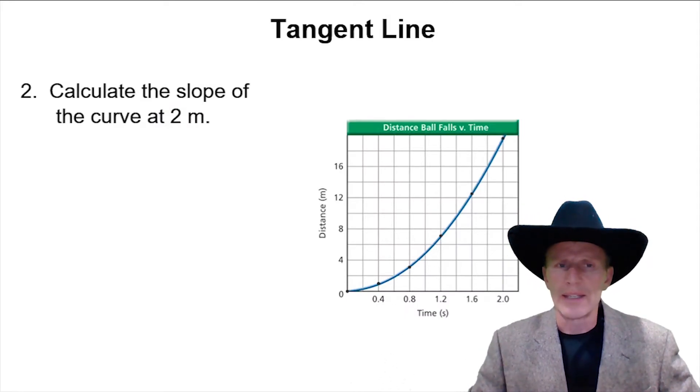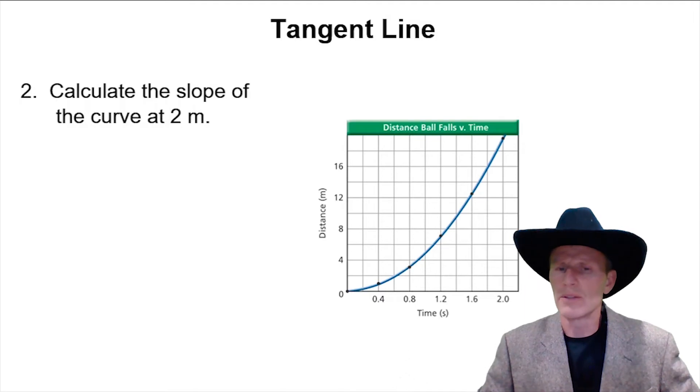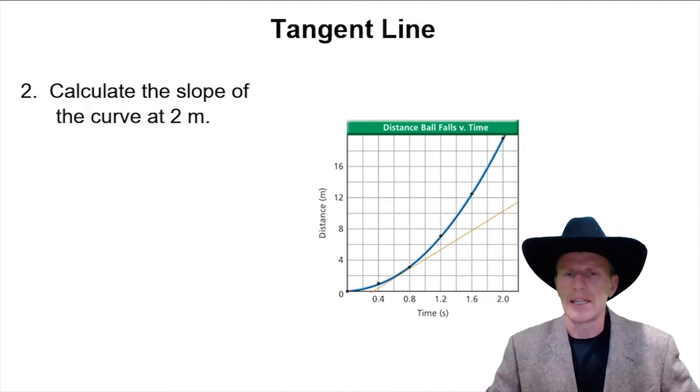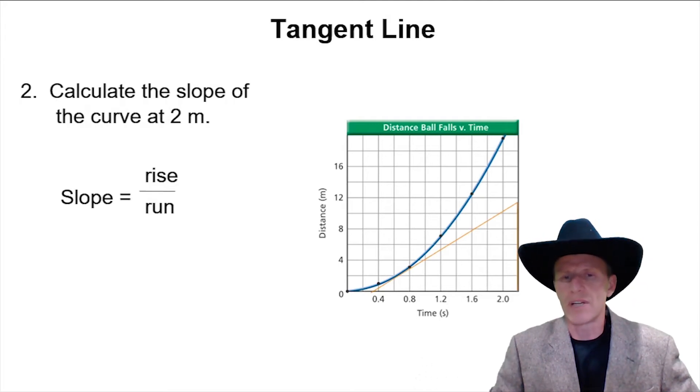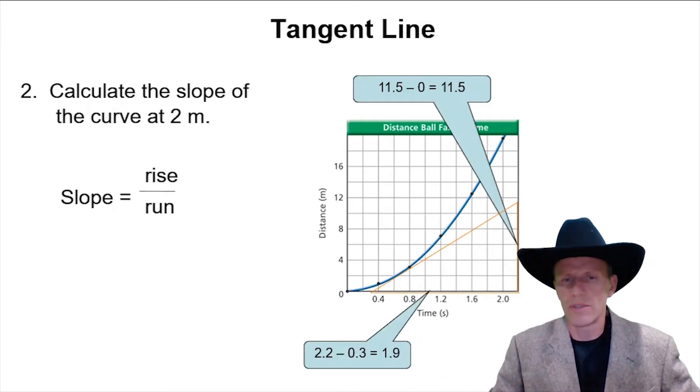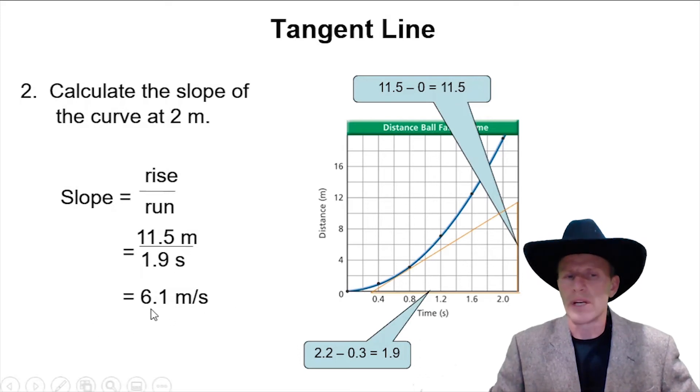So now looking at the slope of the curve at 2 meters, we need to draw a tangent line. And this orange line represents the tangent line. So now we can pick any two points on that line and get the slope. If we measured the vertical height of that triangle and the horizontal, we could get two numbers that represent the rise over the run and divide them to get the answer. So at 2 meters, this runner was running at 6.1 meters per second.